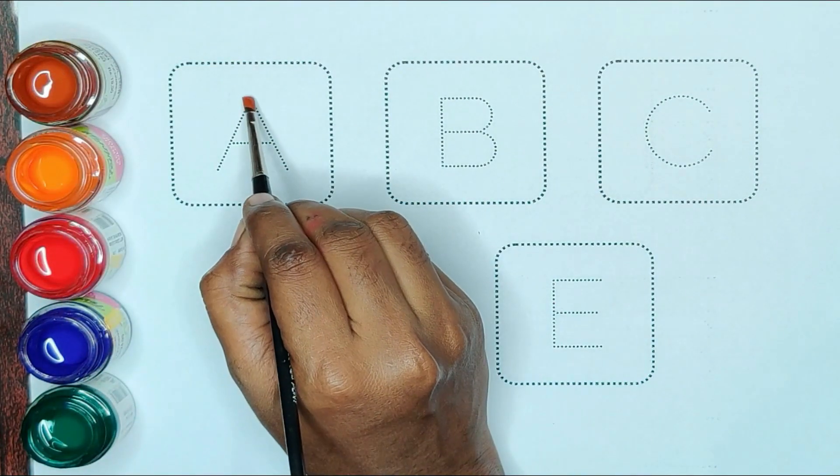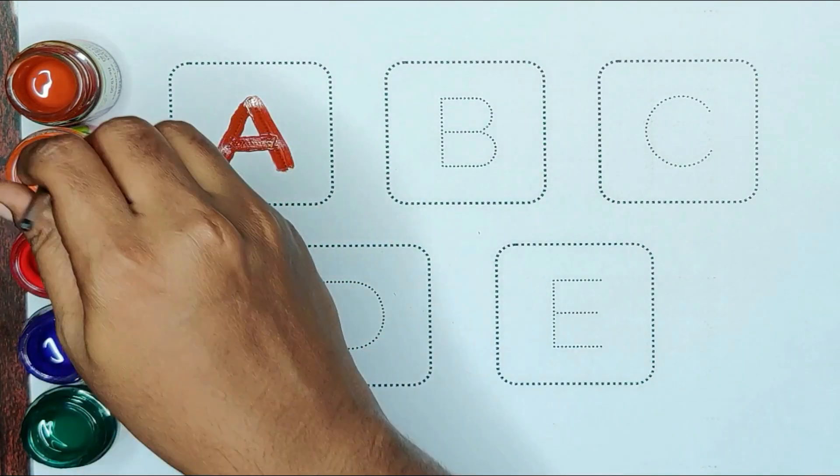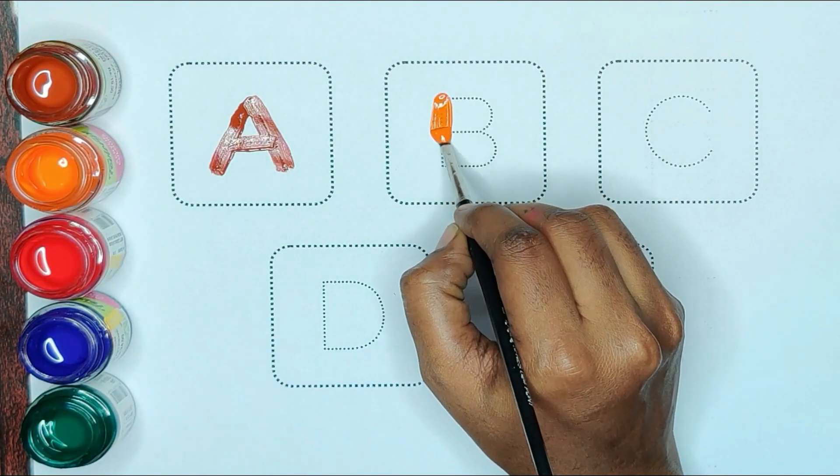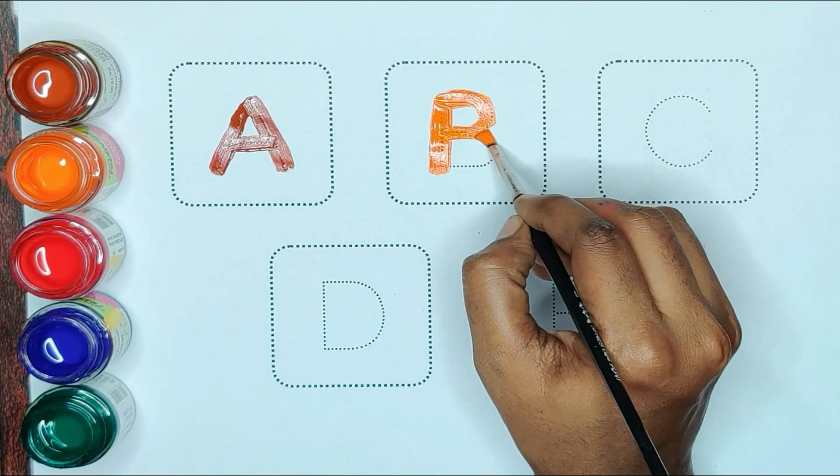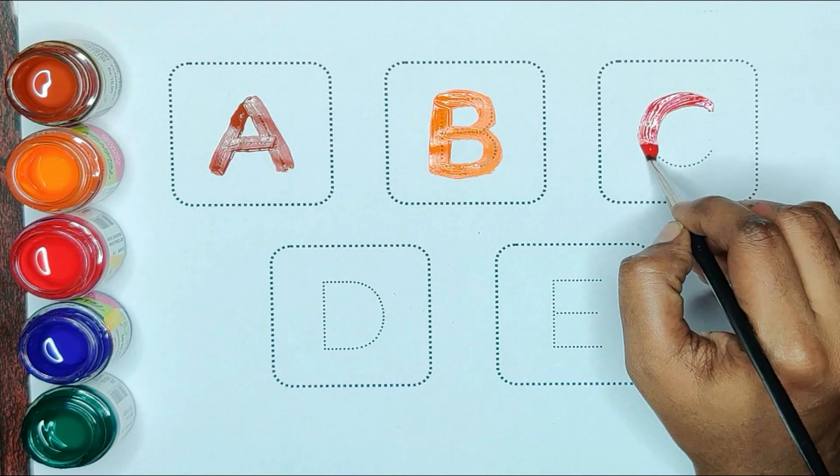First brown color, A. A for aeroplane. Orange color, B. B for ball. Red color, C. C for cat.